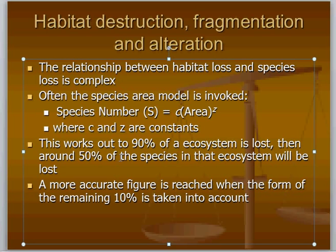Another important point is that the last 10% of an ecosystem is quite often very fragmented. This theoretical support of 50% of the species within 10% of the remaining ecosystem is quite often misleading and optimistic. With fragmentation effects, 50% of the species may not be supported in that last 10%, so maybe we need to conserve more than that.